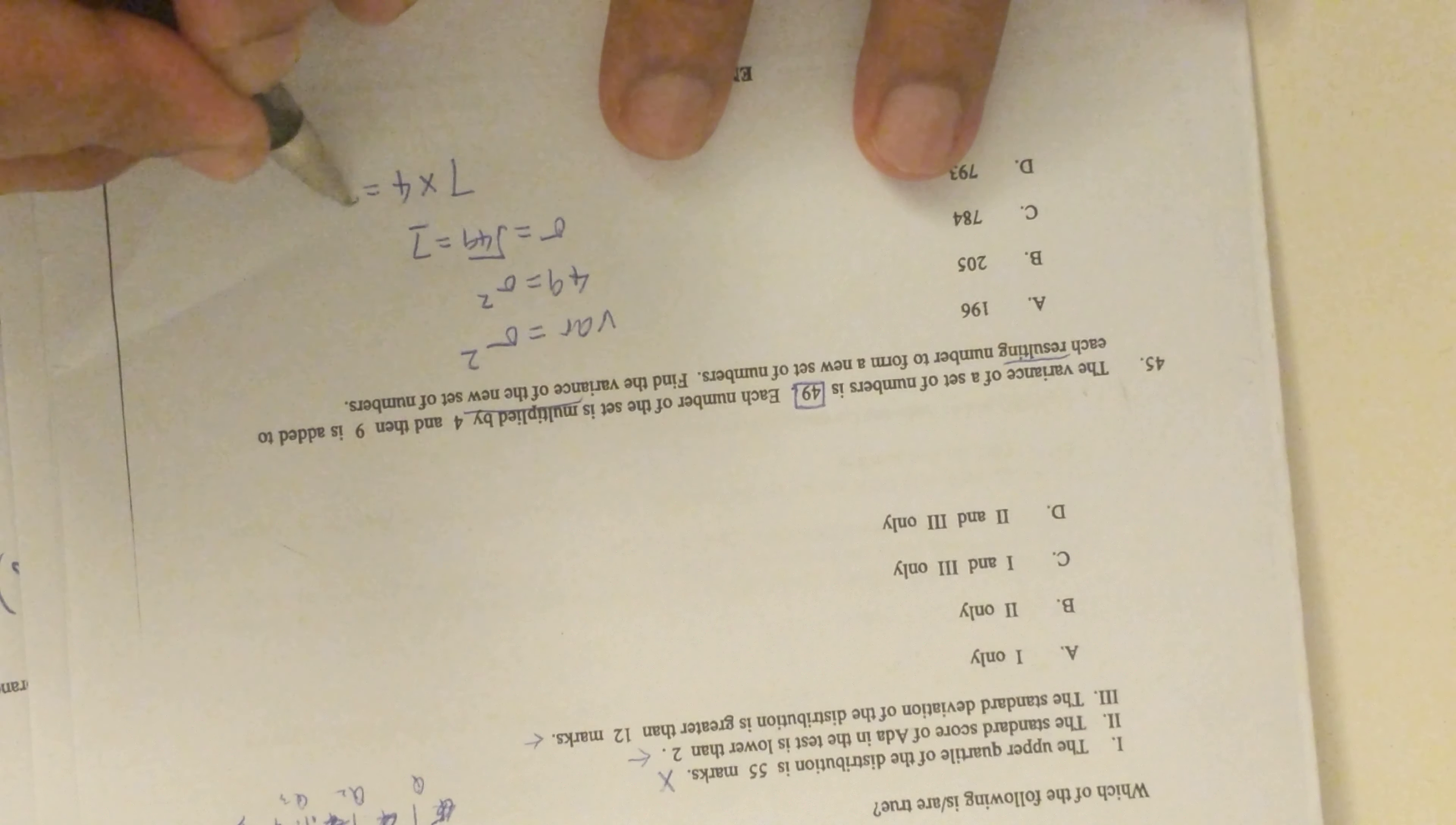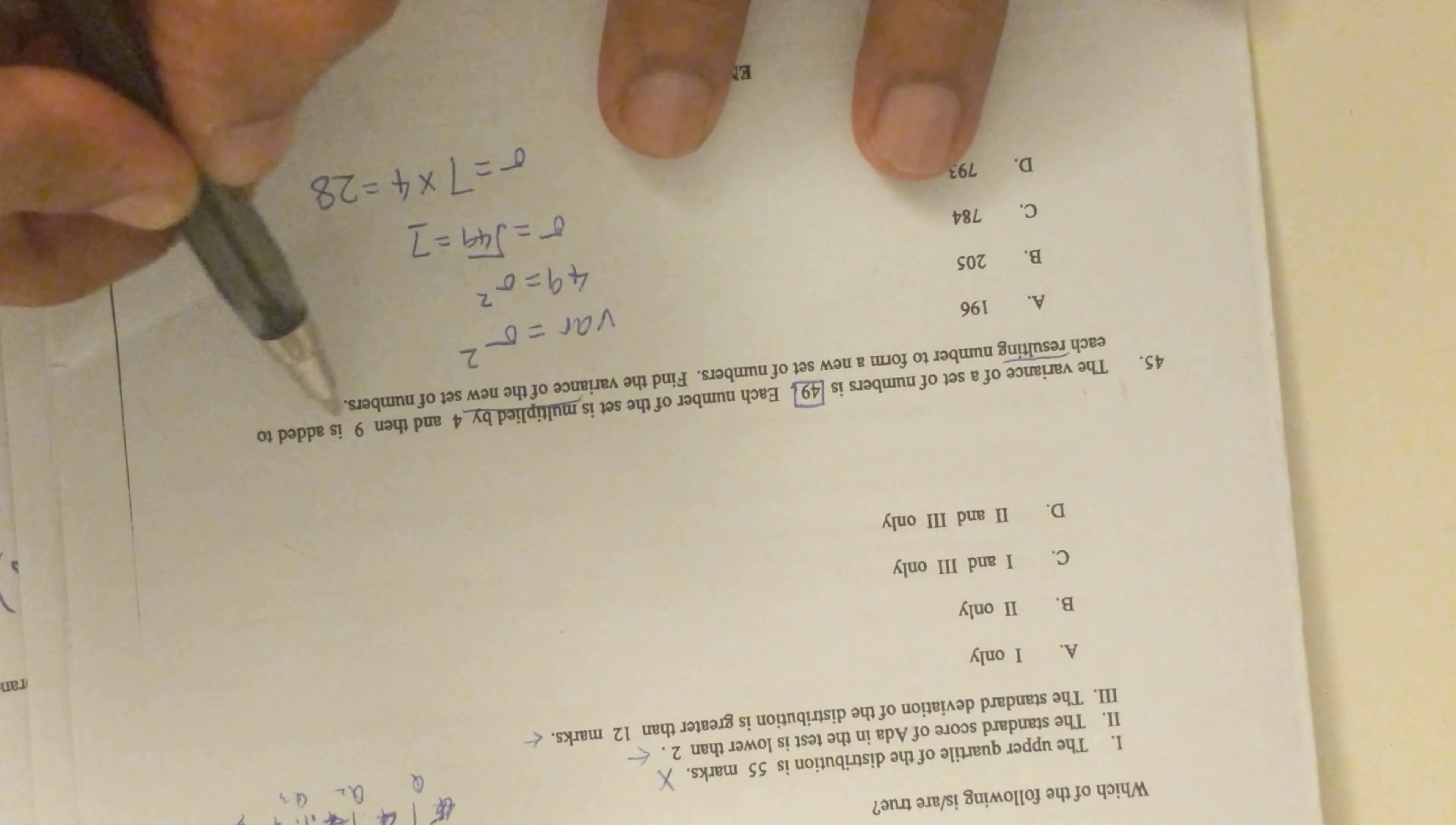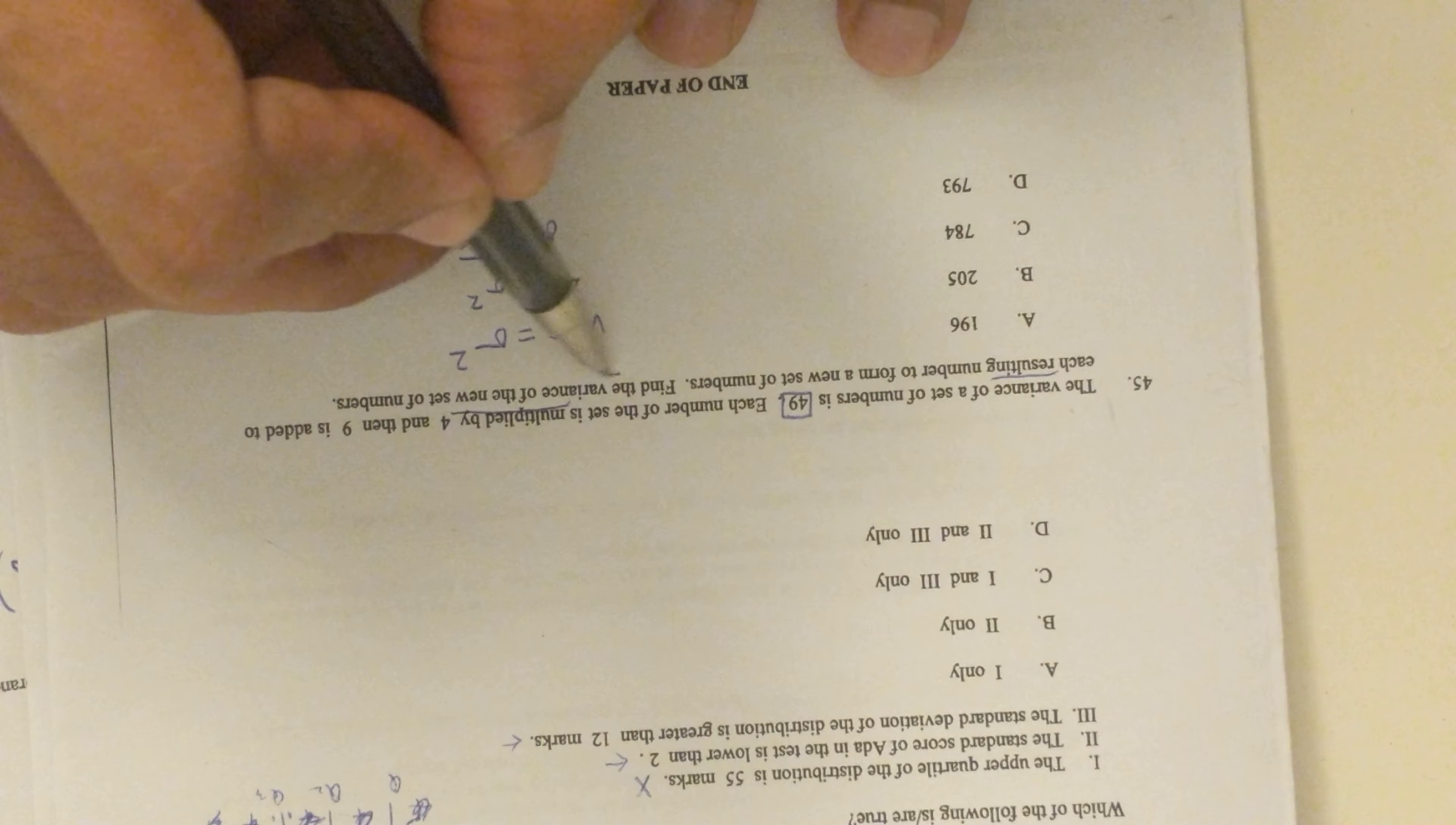So this will be your new SD because it's multiplying by 4. Again, when you add or remove something, SD doesn't change - especially if you're adding it to every single data, then the SD will not change.